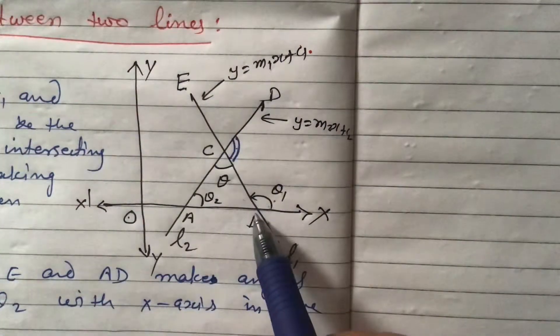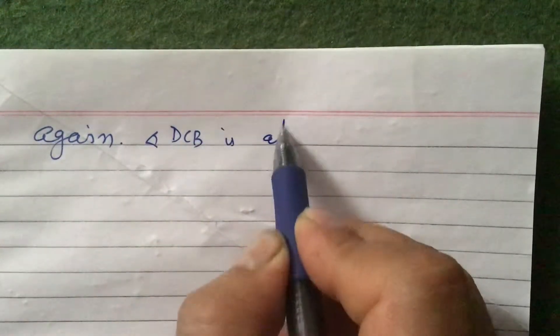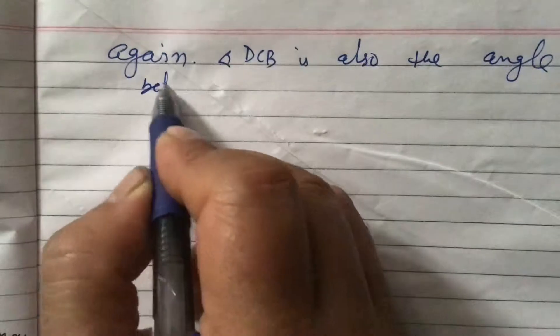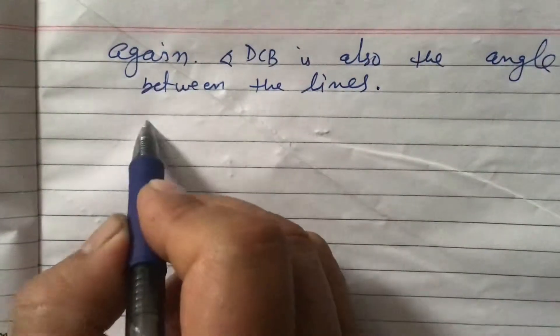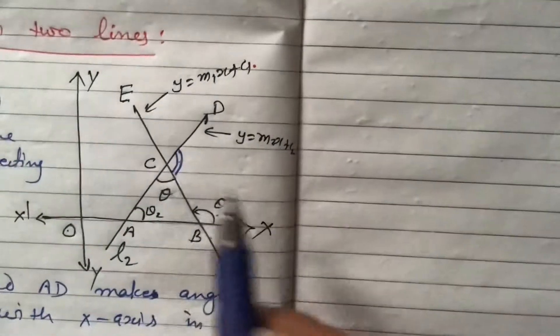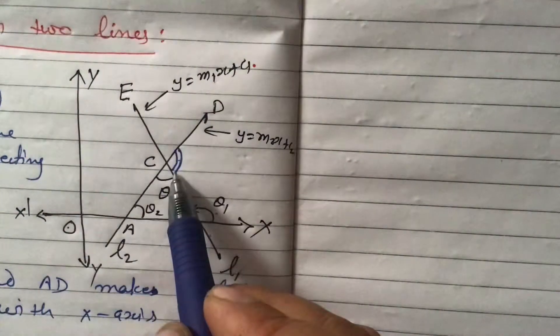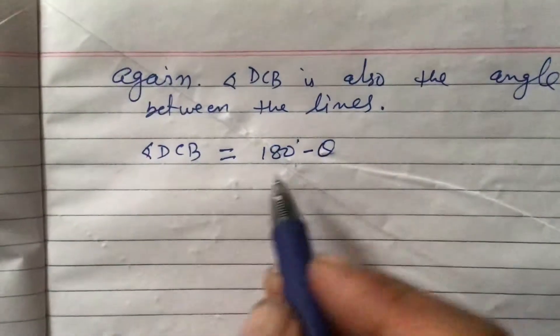Either this angle or that angle — so angle DCB is also an angle between the lines. Since this angle and theta are supplementary, their sum is 180 degrees. Therefore angle DCB equals 180 degrees minus theta.